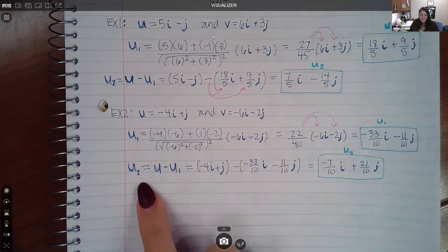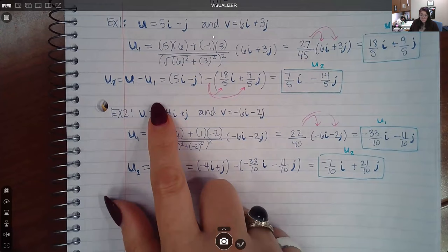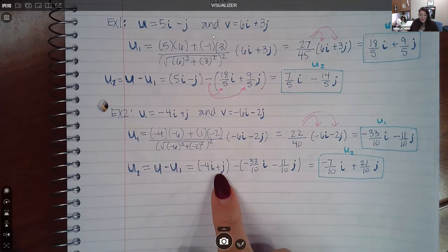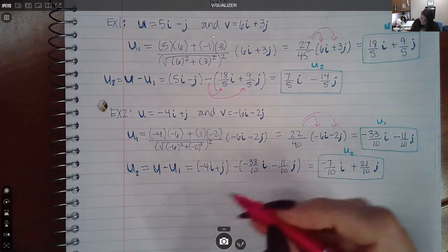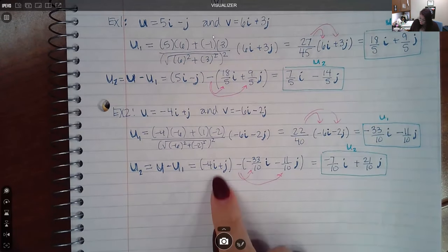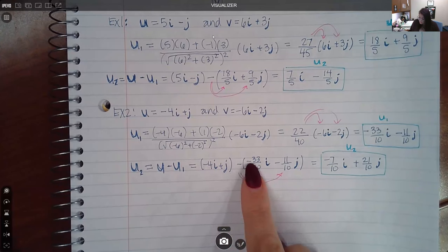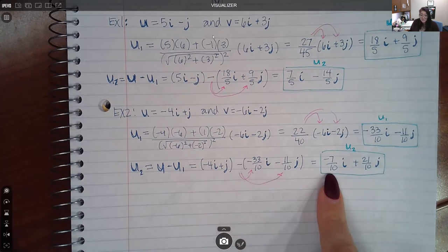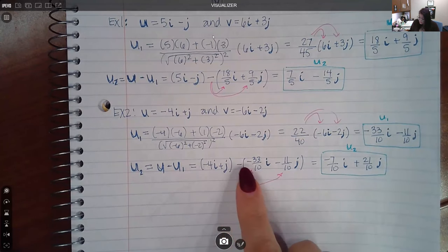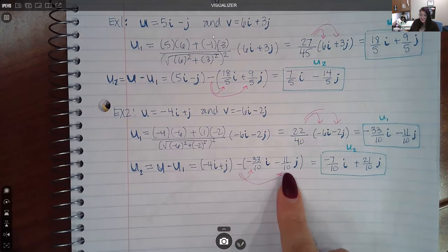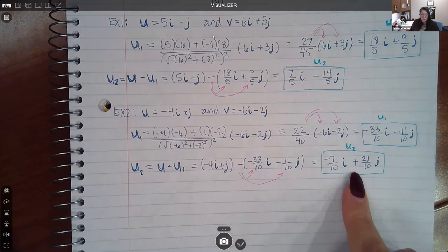Then if you want to find U2, you're going to take U, the original U, negative 4i plus j, minus the U1 you just found. So remember, you do have to distribute this minus. So really what you're doing is negative 4 plus 33 over 10, which resulted in negative 7 over 10. And you're doing positive 1 plus 11 over 10, which resulted in 21 over 10.